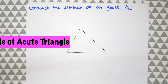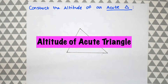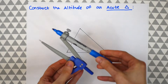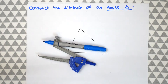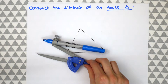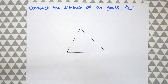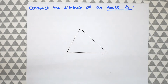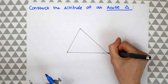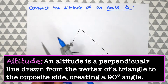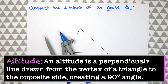Here is our acute triangle — that's just a triangle that has all angles less than 90 degrees. We're going to need our compass and a straight edge. Before we begin, let's review what an altitude means. An altitude is a perpendicular line drawn from the vertex of a triangle to the opposite side, creating a 90 degree angle.